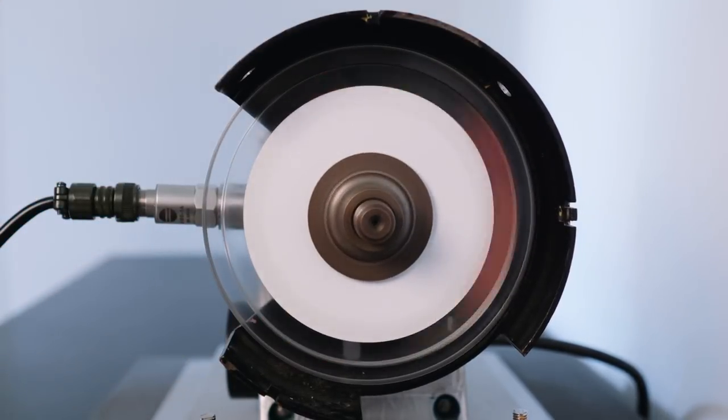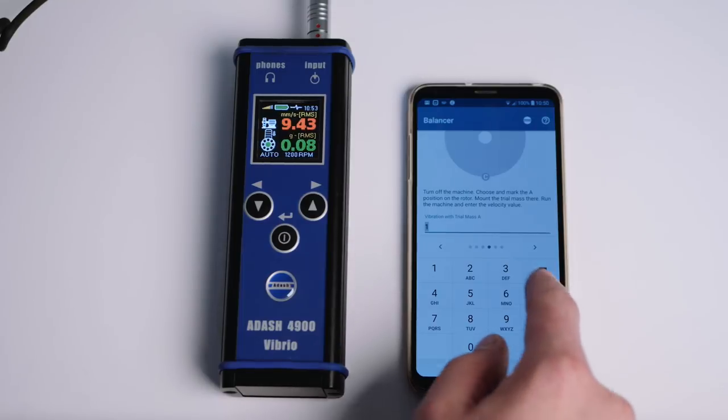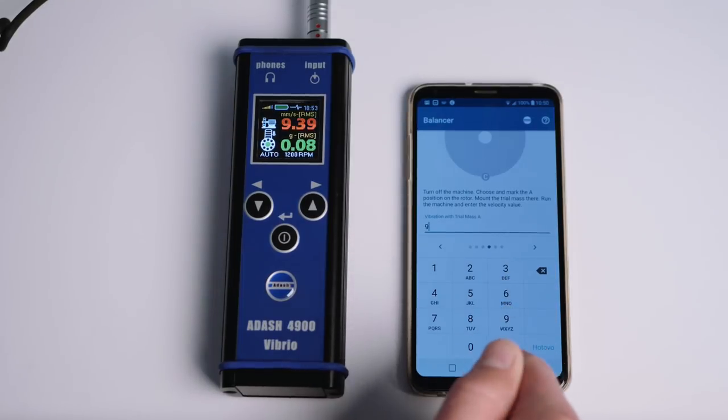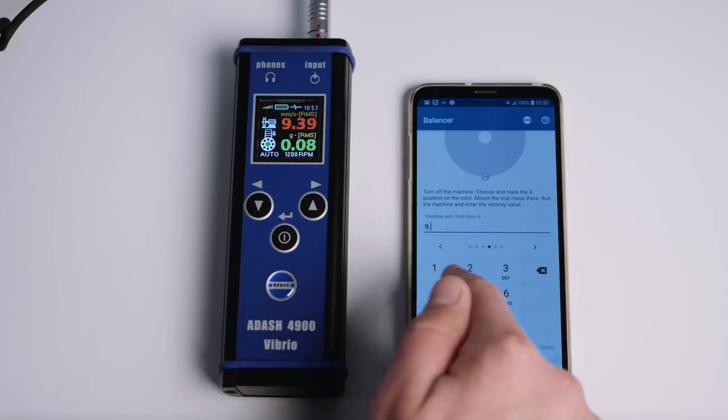Run the machine, read the velocity reading and enter the value into the app. Switch off the machine.